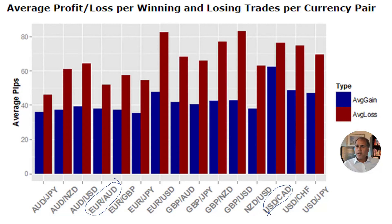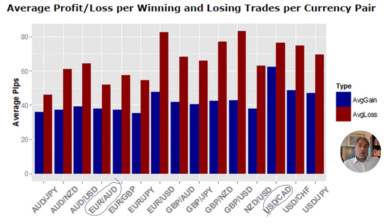I love this chart — I got this from a US brokerage. Let's assume for the moment it's accurate, given that it shows that the average loss for every single currency pair amongst retail clients is greater than the average gain. In other words, the broker is admitting their clients, taken as a whole, lose on every single currency pair.